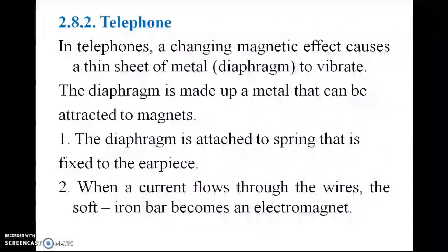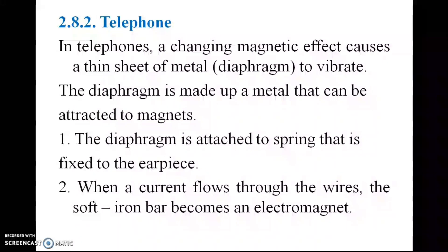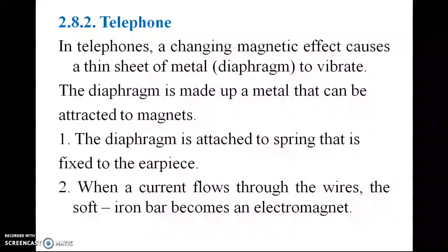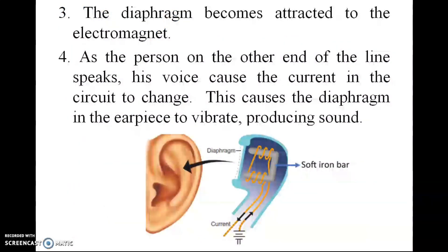In a telephone, a changing magnetic effect causes a thin sheet of metal — the diaphragm — to vibrate. The diaphragm is made of metal attached to a magnet and connected to a spring fixed to the earpiece. When current flows through the wires, the soft iron bar becomes an electromagnet. When a person speaks on the other end, their voice causes the current to change, which causes the diaphragm in the earpiece to vibrate and produce sound.